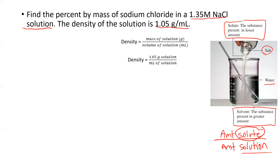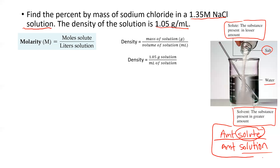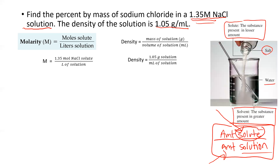What does 1.35 molar sodium chloride mean? Molarity — big M — is really a ratio, and that ratio is a conversion factor: moles of solute per liter of solution. It's a way of measuring concentration — an amount of solute per amount of solution. So 1.35 molar sodium chloride means there are 1.35 moles of sodium chloride, which is my solute, per total liter of solution. The units are moles per liter.